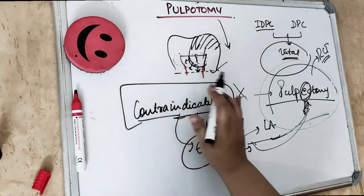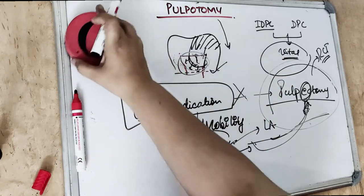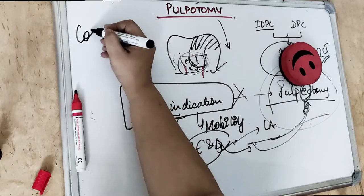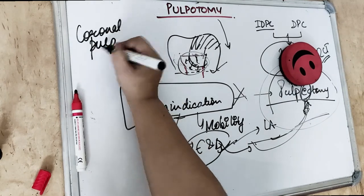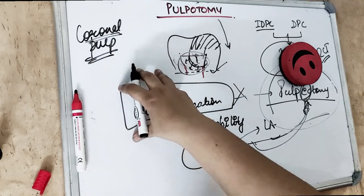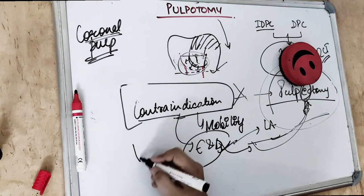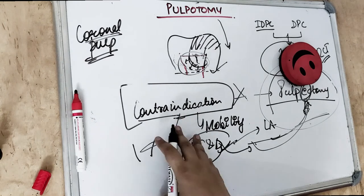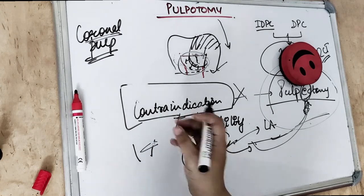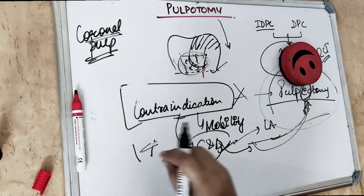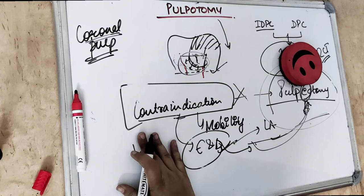The entire roof of the pulp chamber is removed. In pulpotomy we remove only the coronal pulp, not the whole pulp. Any overhanging dentine is also removed, and a funnel-shaped access to the entrance of the root canal is produced. The pulp chamber is then irrigated with a water syringe, and a moistened cotton pellet is placed over the pulp stumps until a clot is formed.